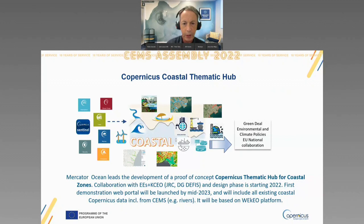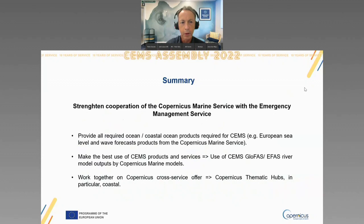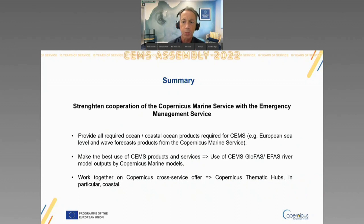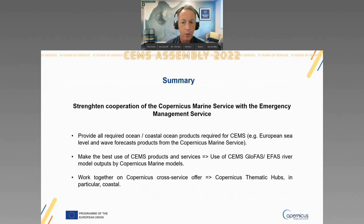In summary, we want to continue interacting with the Emergency Management Service to strengthen cooperation. Our philosophy is to make sure we provide all required ocean or coastal ocean products — typically the example of European sea level and wave forecasts. We also want to make the best use of Emergency Management Service products and services, in particular river model outputs, and work together on this Copernicus cross-service offer through the coastal thematic hub, where there are obvious links to be made.